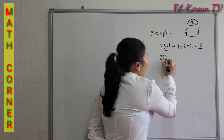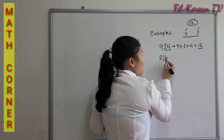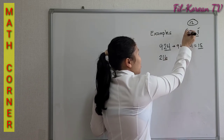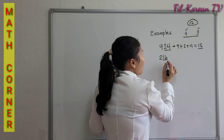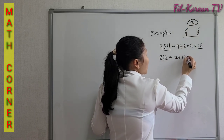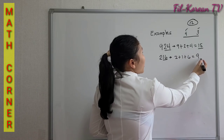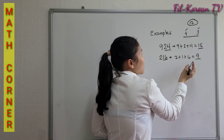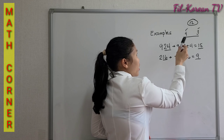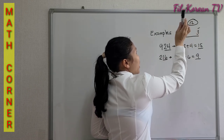Another example: 216. The last two digits form a number 16, so 16 is divisible by 4. If we add the digits, 2 plus 1 plus 6 equals 9, and 9 is divisible by 3. Since 216 is divisible by both 4 and 3, it is also divisible by 12.